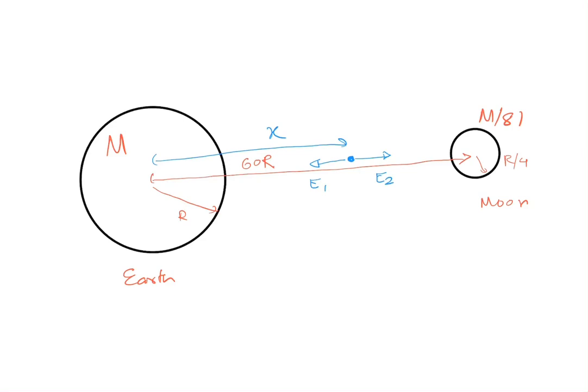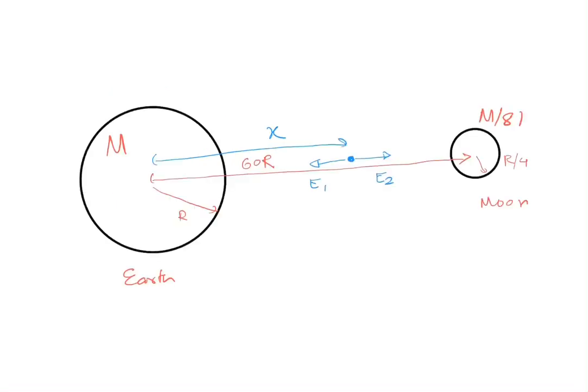We can write the values of E1 and E2. E1 will be GM/x². And E2 will be G times mass of moon, mass of moon is M/81, times... what is the distance of the point from the moon? Total is 60R minus x, so 60R minus x whole squared.